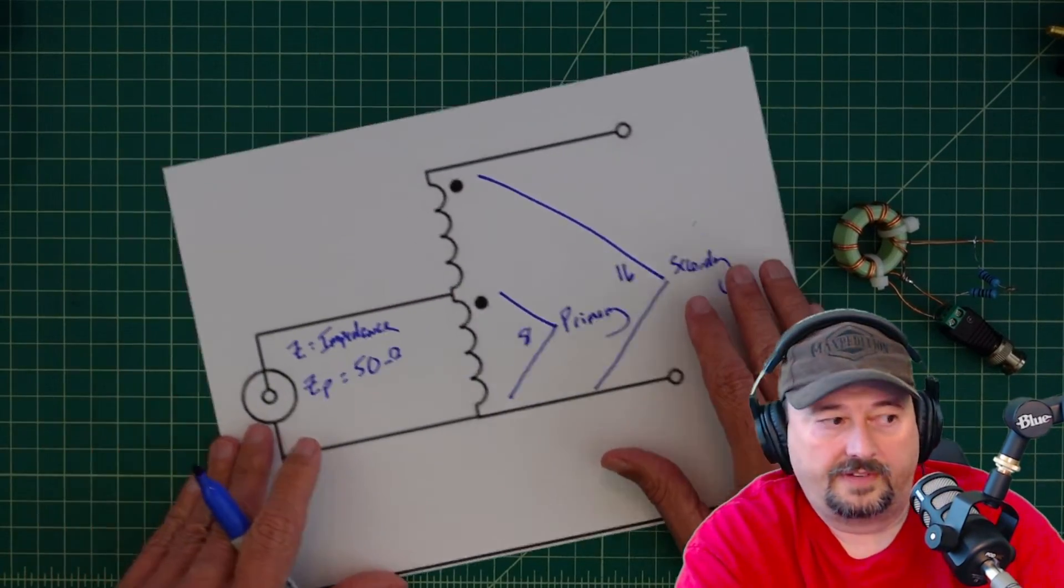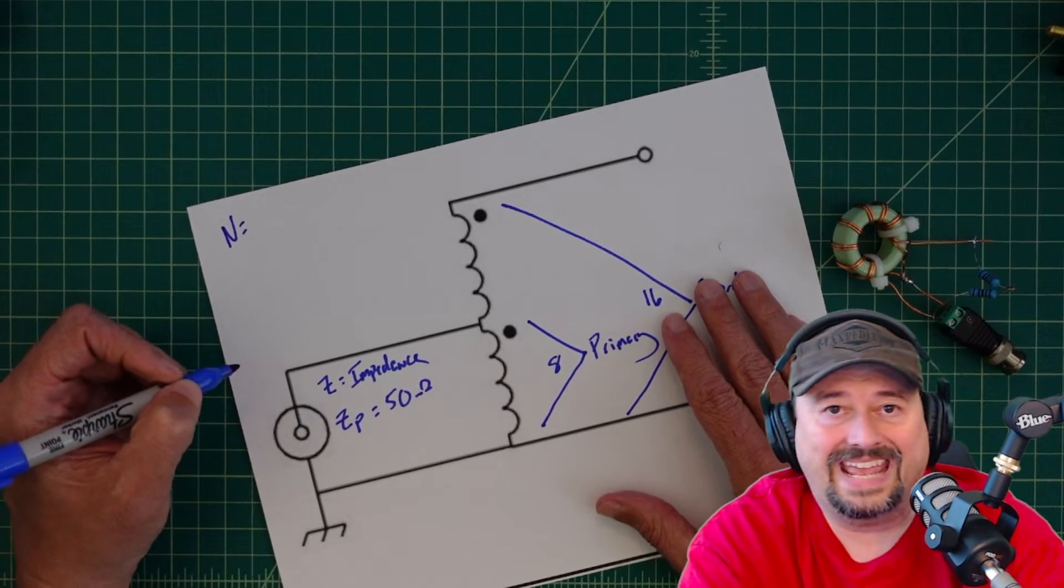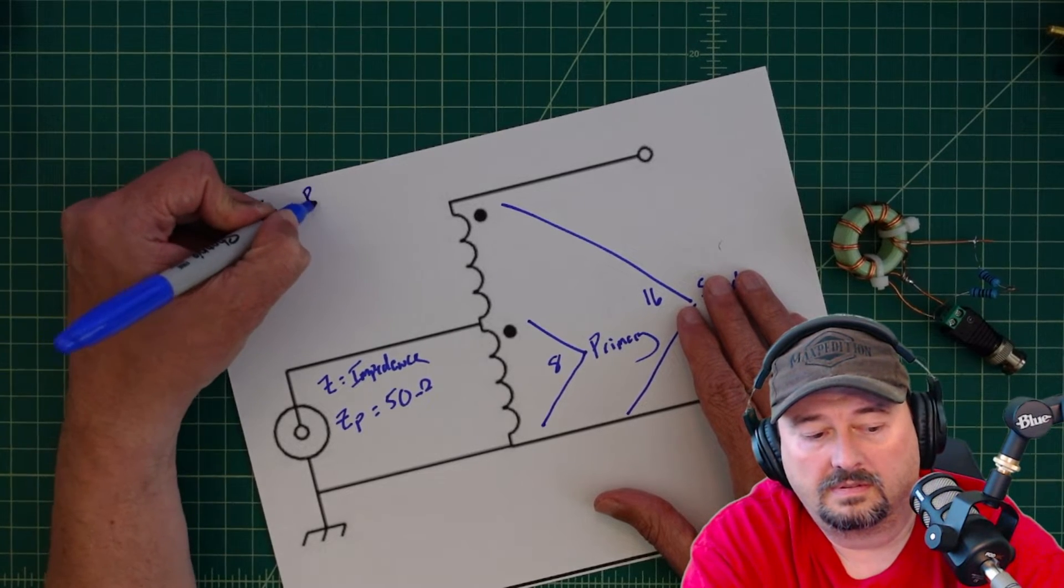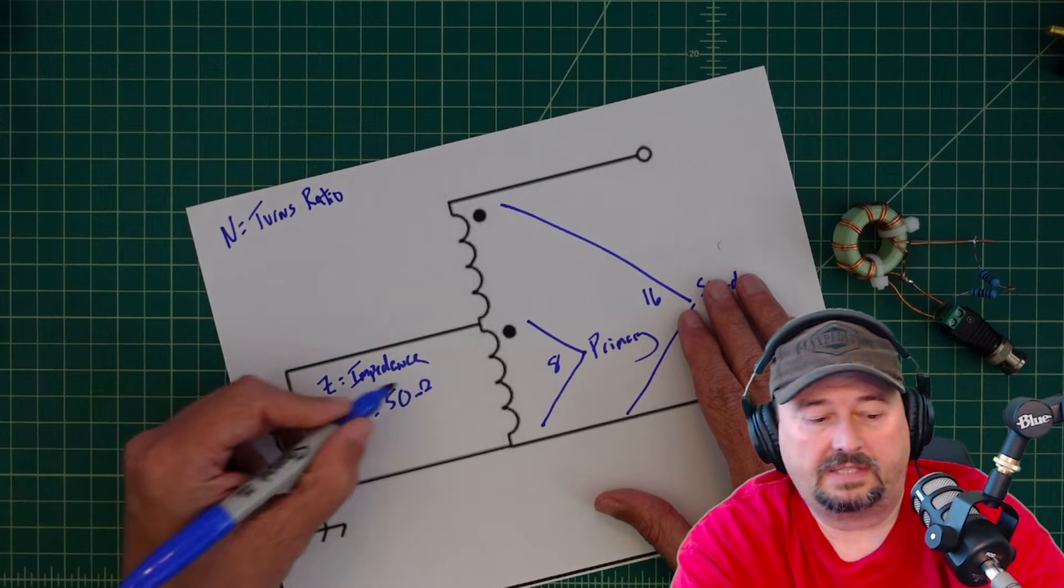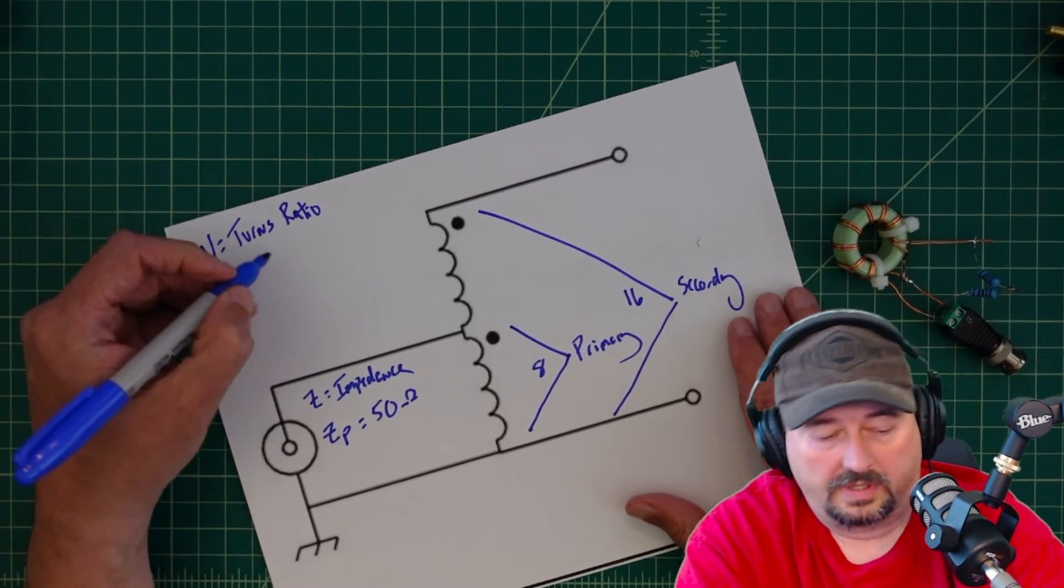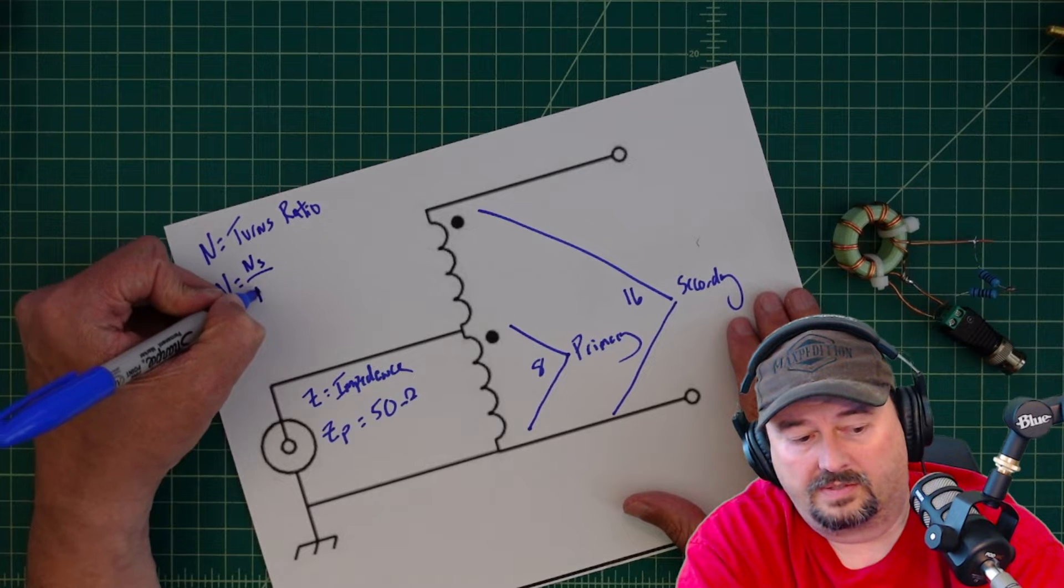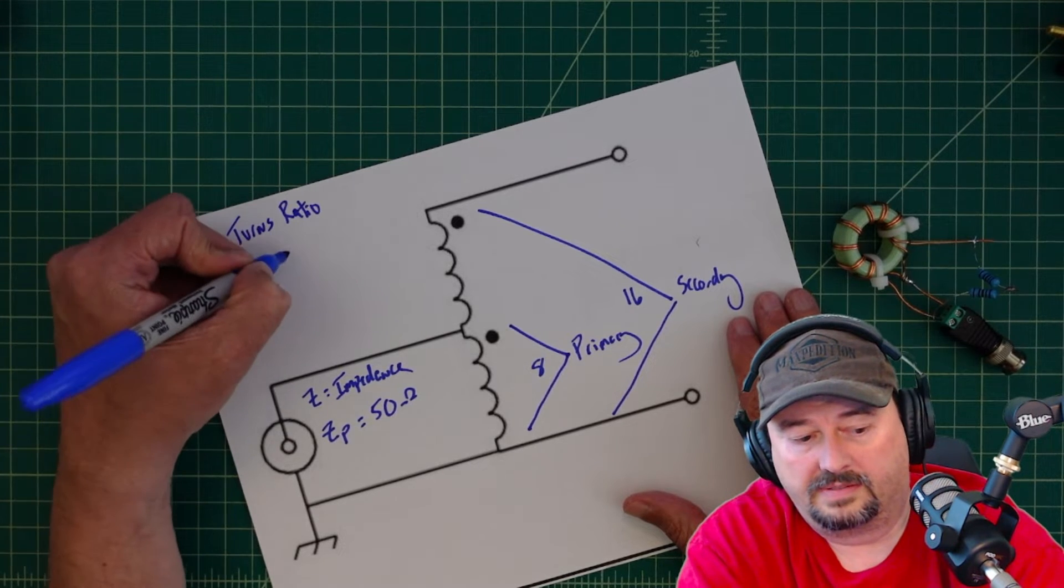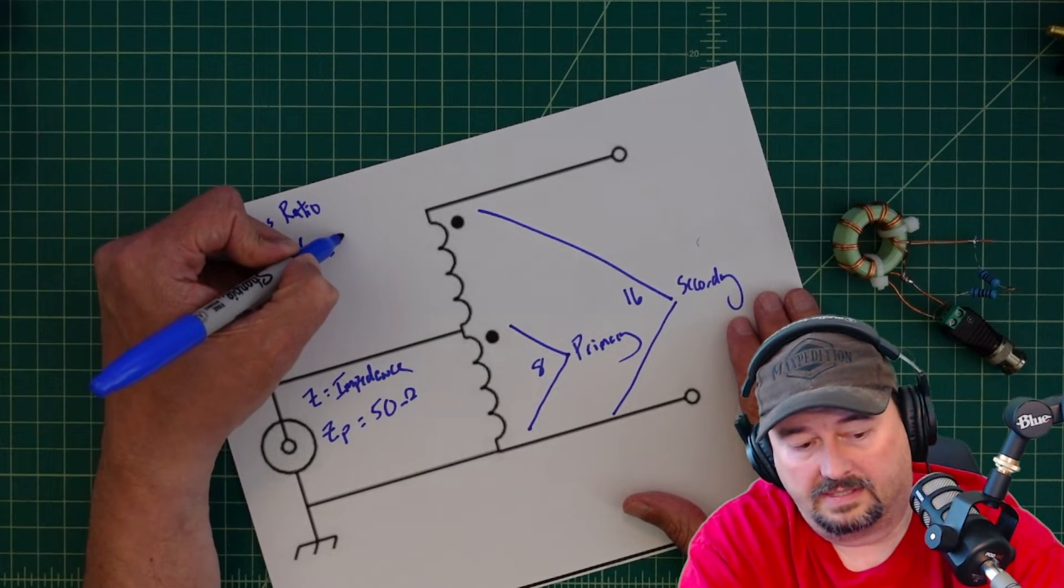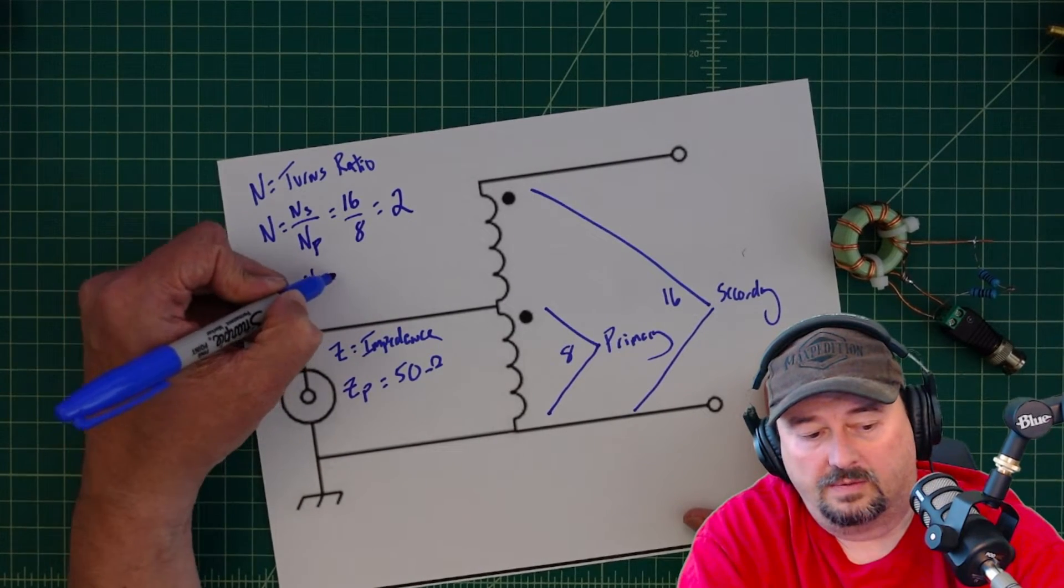Now when we do this there's a couple of things we want to figure out. So there's something called turns ratio. And in this case we're going to use the letter N to depict our turns ratio. So when we take a look at how to calculate this what you do is N equals your turns ratio on your secondary so that's Ns divided by your turns ratio on your primary. So that would be equal to 16 divided by 8. And when you do that math you get the magic number 2. So in this case our turns ratio N equals 2.